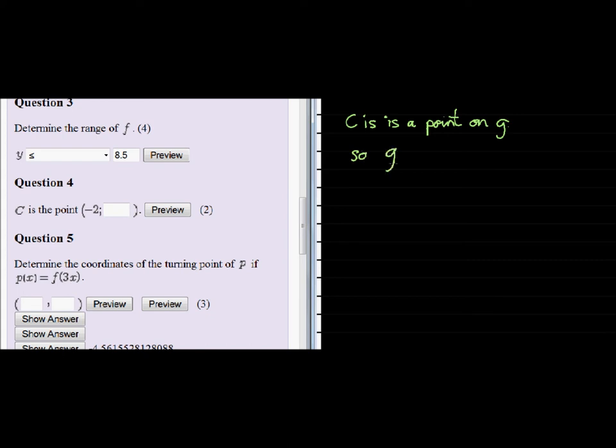G of negative 2 equals negative 16 divided by negative 2, which gives me an answer of positive 8. This tells me that C is the point negative 2 comma 8.